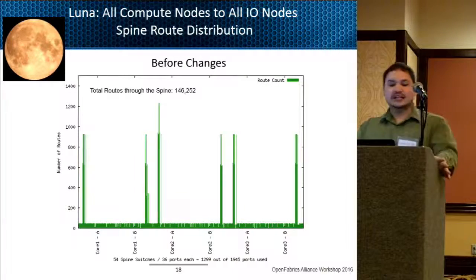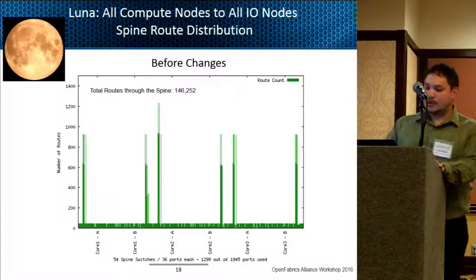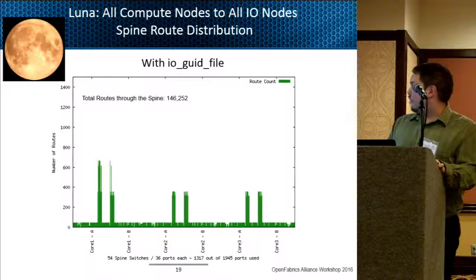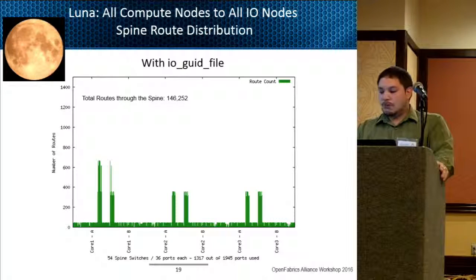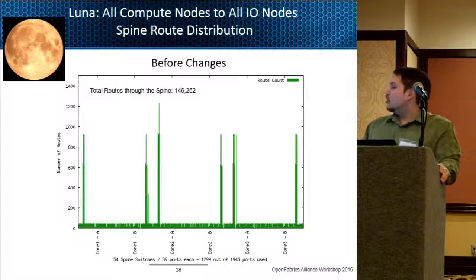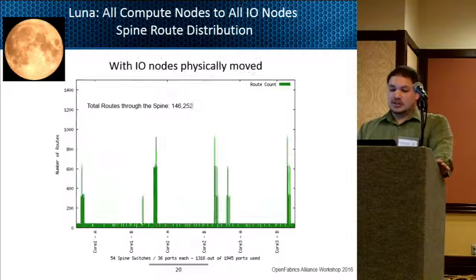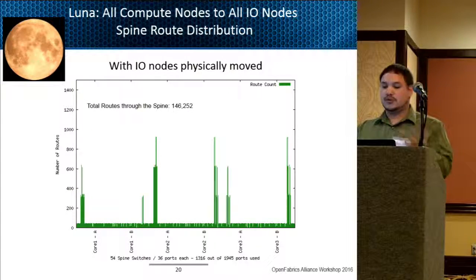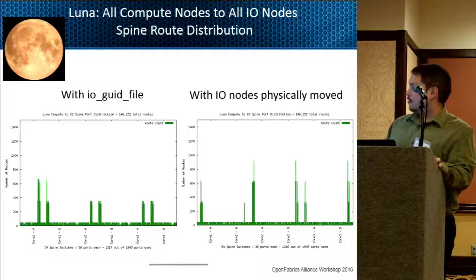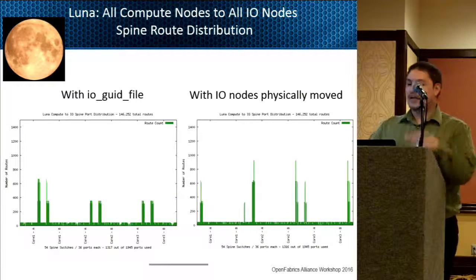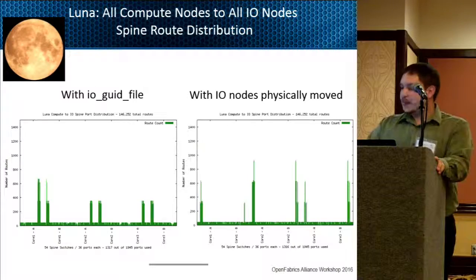Finally, we looked at one of our secure clusters — Luna — also set up with three core chassis switches and a fat tree routing algorithm. Before changes, we saw those same spikes between compute and IO nodes. After implementing the IO node GUID file, we did see the routes balance out a little bit more — still with the same spikes on certain spine cards, but much better than before. Luna was set up the same way as Mustang with a couple of IO nodes on the same line cards, so physically moving them actually made performance a little bit worse. The IO node GUID file helped to balance routes a lot better than physically moving them on that fabric, and having multiple IO nodes on the same line card had a large impact on how routes are separated across spine ports.